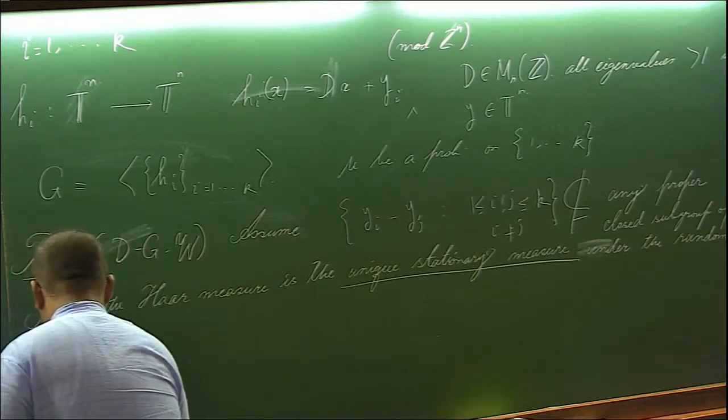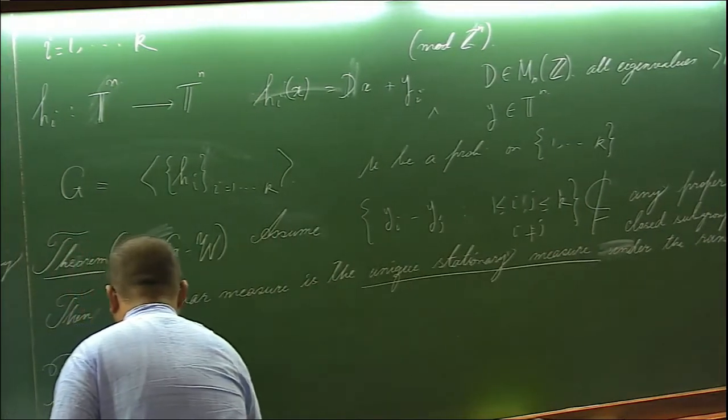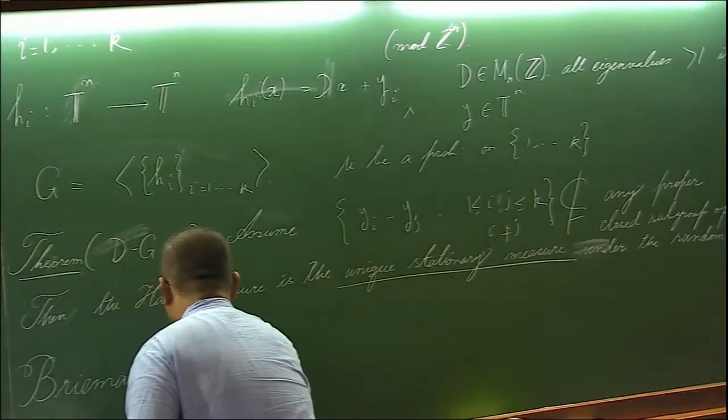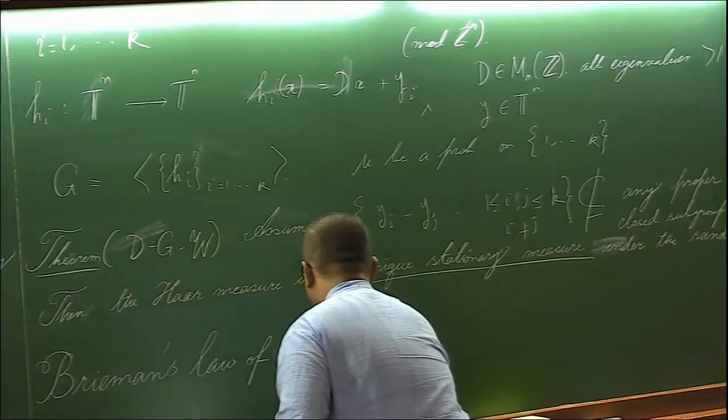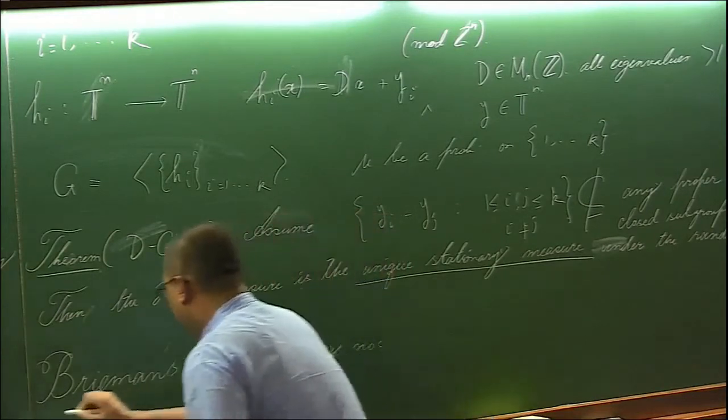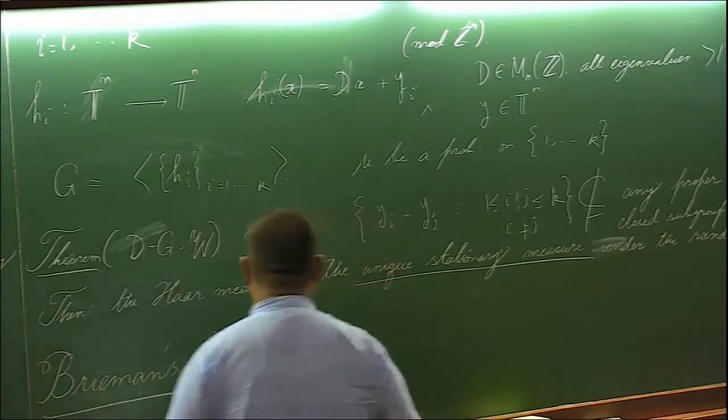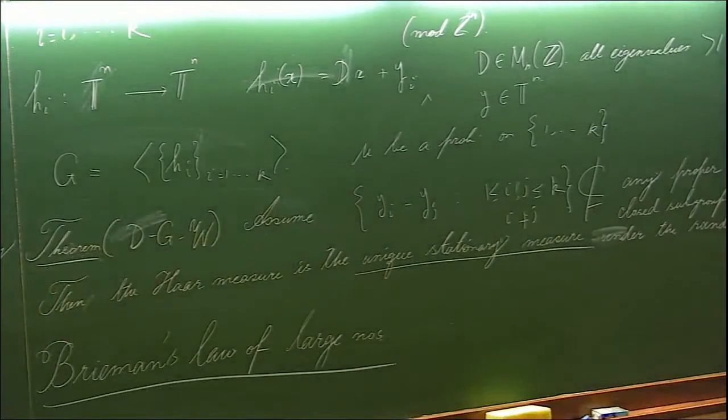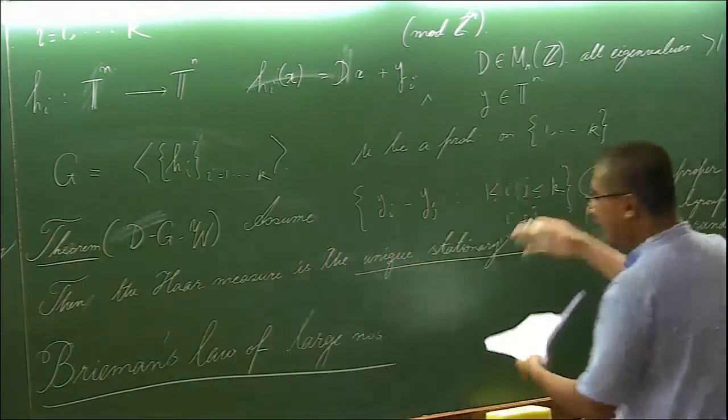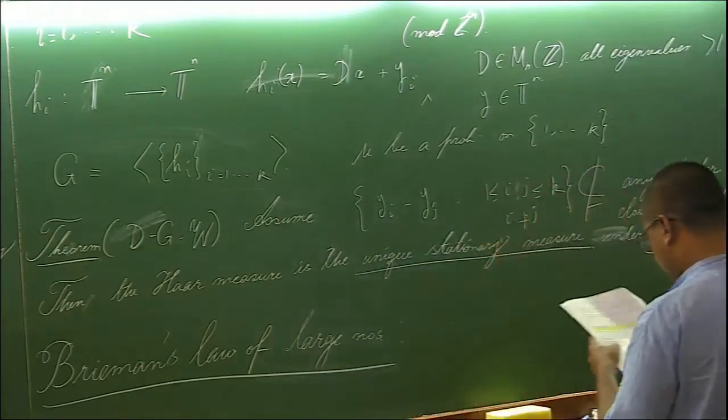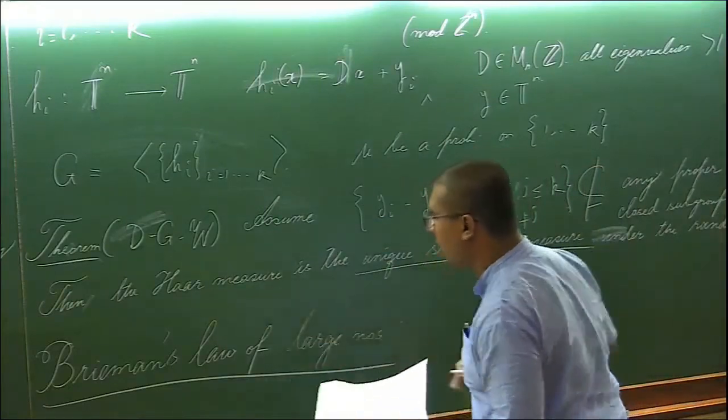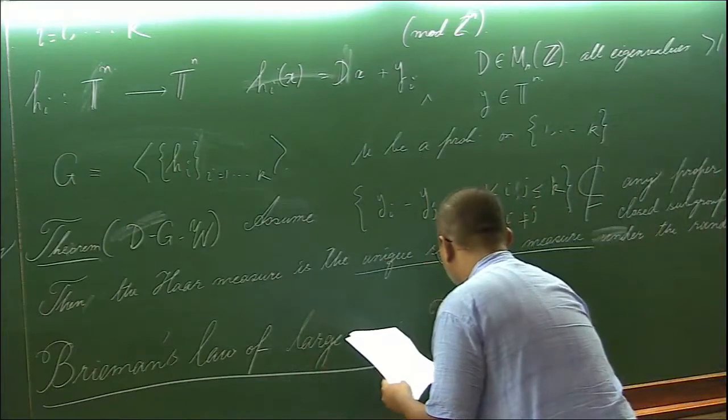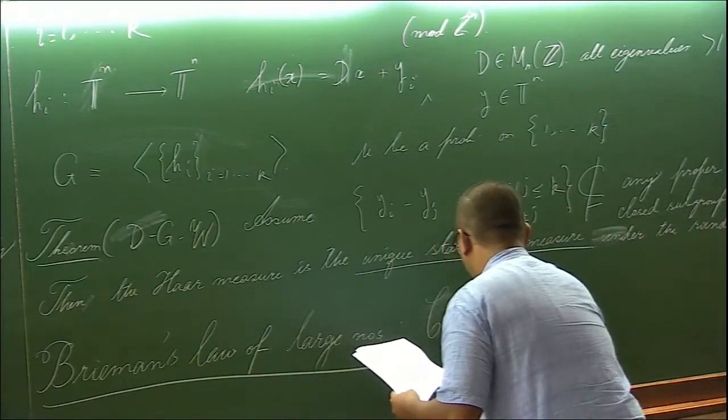We shall appeal to something called Bremen's law of large numbers. I am not getting into what it is. However, we are more interested in the corollary that we obtain from this and using this Bremen's law of large numbers. In view of this theorem and applying Bremen's law of large numbers, what we get as a corollary is the following.